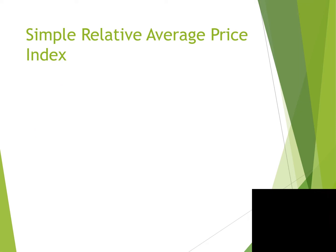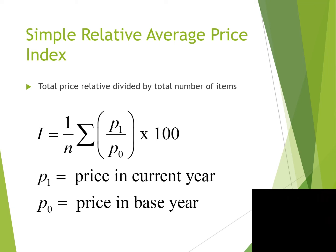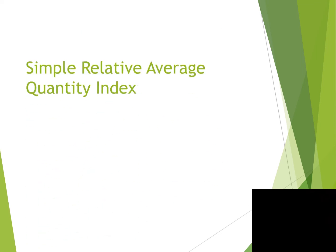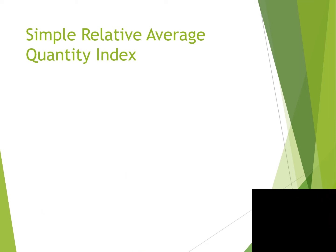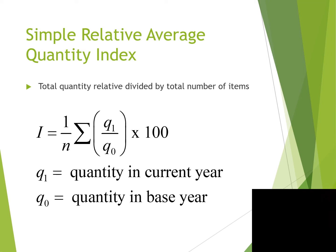Simple Relative Average Price Index: Total price relative divided by total number of items. Formula: I = (1/N) × Σ(P₁/P₀) × 100, where P₁ is price in current year and P₀ is price in base year. Simple Relative Average Quantity Index: I = (1/N) × Σ(Q₁/Q₀) × 100, where Q₁ is quantity in current year and Q₀ is quantity in base year.